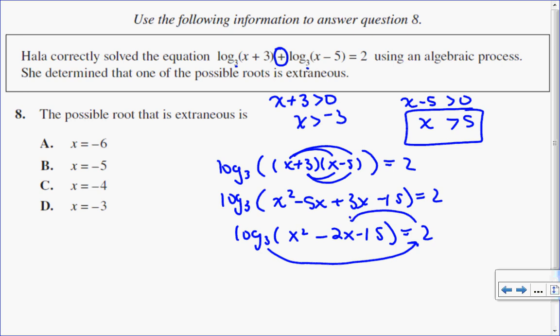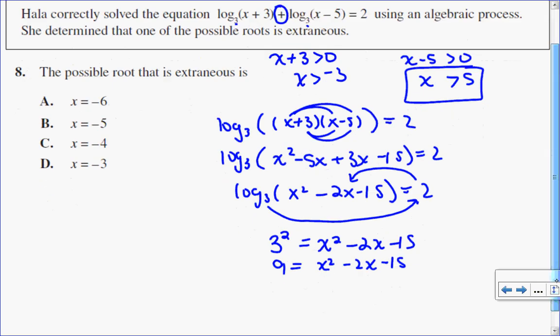3 to the exponent of 2 is equal to my argument. So 3 squared equals x squared minus 2x minus 5. So this is 9 equals x squared minus 2x minus 15.